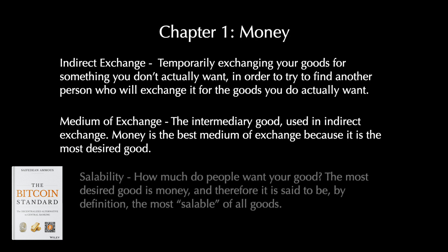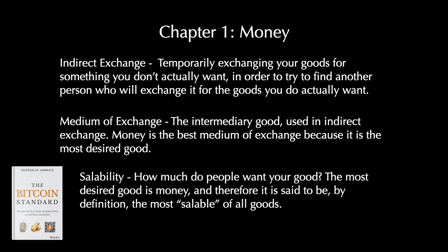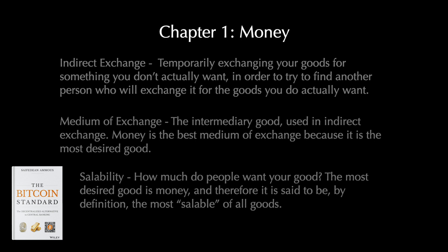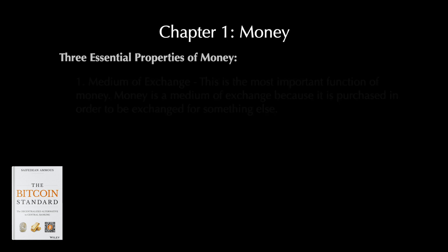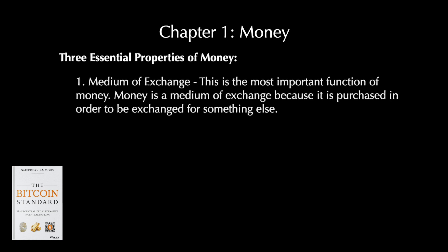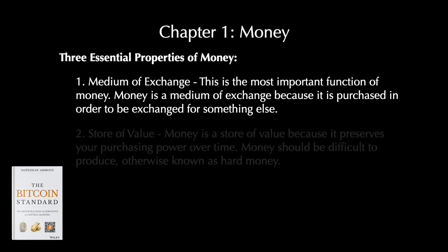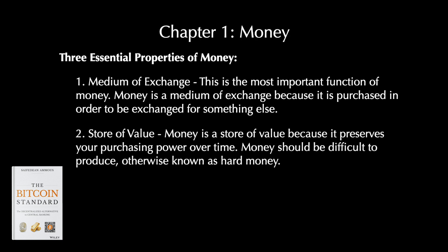What tends to happen is that a single medium of exchange emerges for everyone to trade all goods for — that single medium of exchange is called money. The concept of saleability simply means how much do people want your good. The most desired good is money, and therefore it is said to be, by definition, the most saleable of all goods. There are three essential properties of money. Number one: medium of exchange — the most important function of money, purchased in order to be exchanged for something else. Number two: store of value — money preserves your purchasing power over time. Money should be difficult to produce, otherwise known as hard money. If it is easy to produce, otherwise known as easy money, people will produce more of it, driving its value down, which in turn makes it a bad store of value. Historically, the people who have chosen the hardest money, whether by choice or accident, have accrued the most wealth.